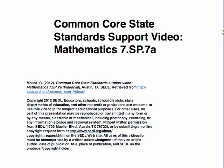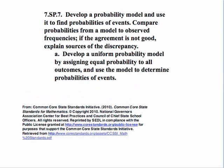This is Common Core State Standards Support Video in Mathematics. The standard is 7.SP.7A. The standard states: develop a probability model and use it to find probabilities of events. Compare probabilities from a model to observed frequencies. If the agreement is not good, explain sources of the discrepancy. Part A states: develop a uniform probability model by assigning equal probability to all outcomes and use the model to determine probability of events.